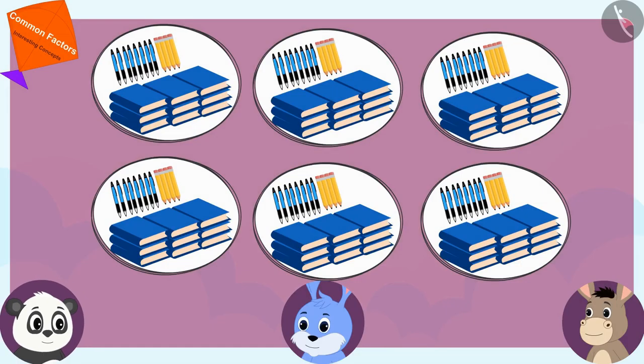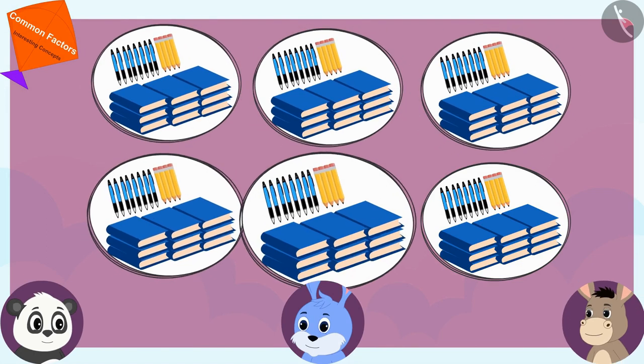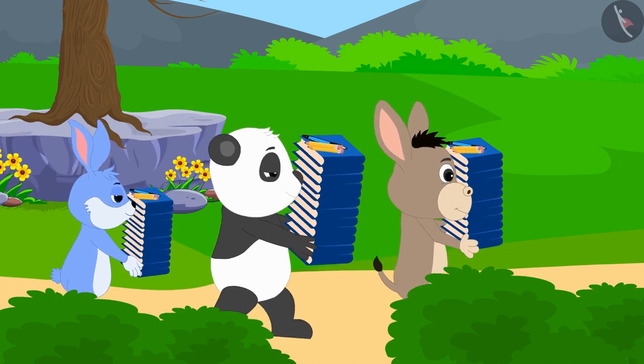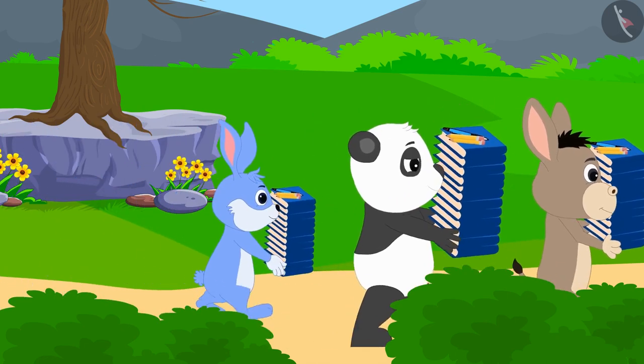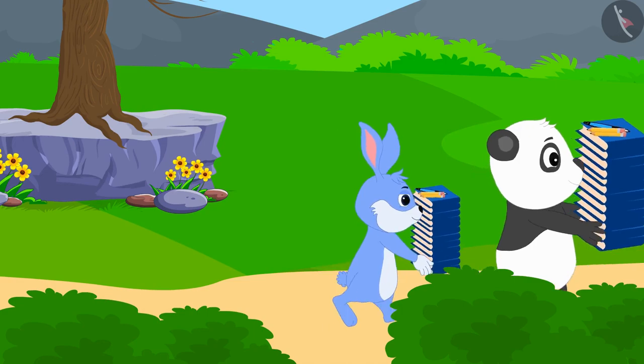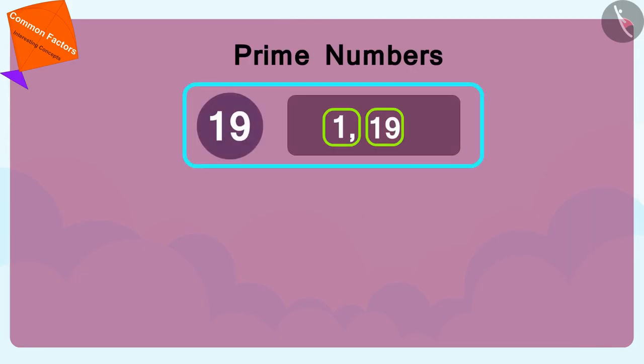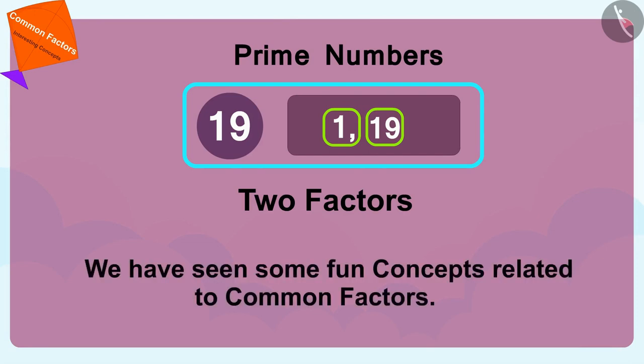In this way, Golu, Bunny, and Bola formed six groups of all those items and excitedly they went out to deliver them to the needy children of the village. Children, in this video we have seen some fun concepts related to common factors.